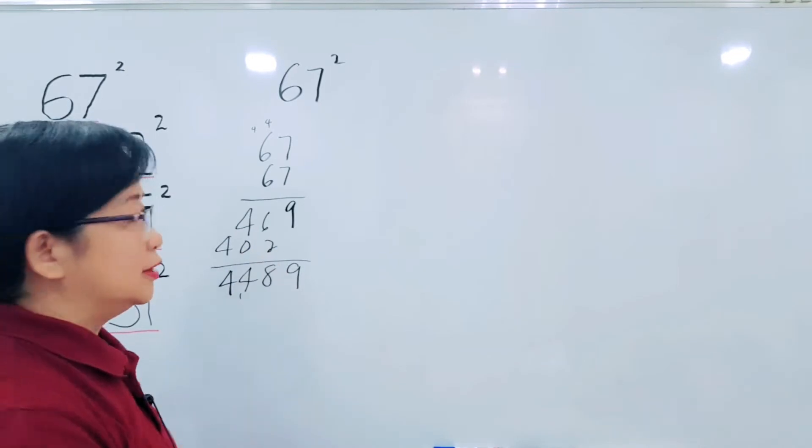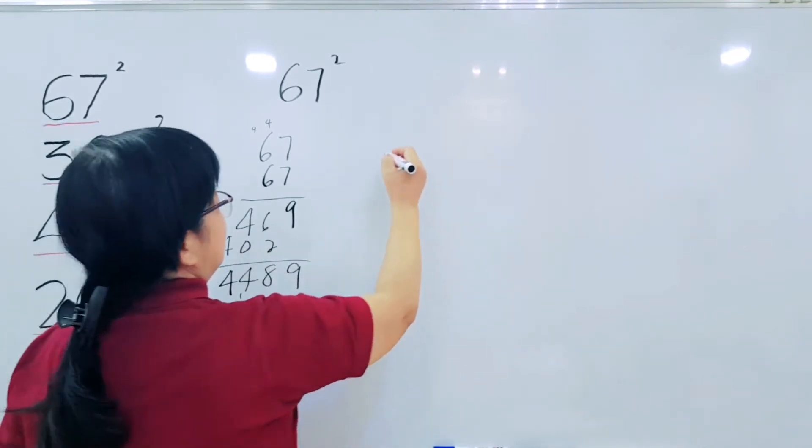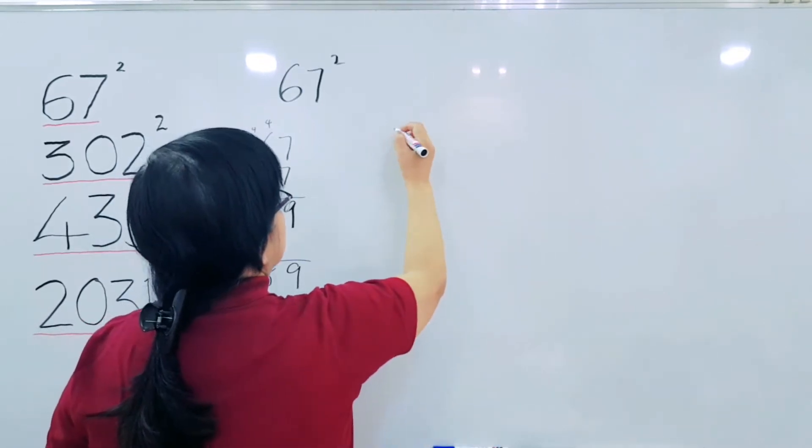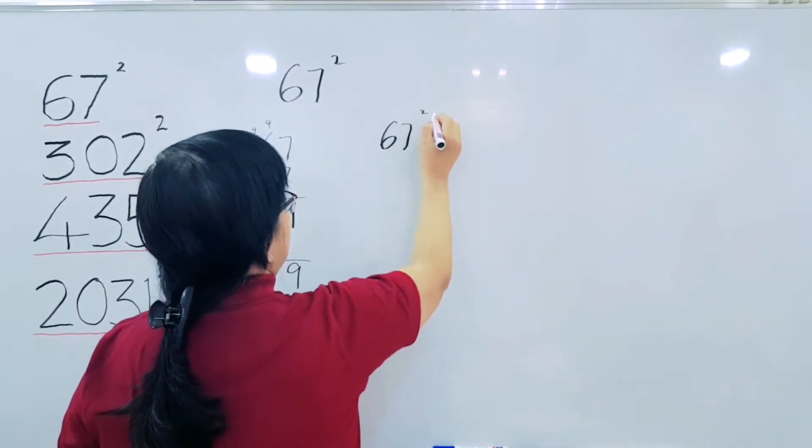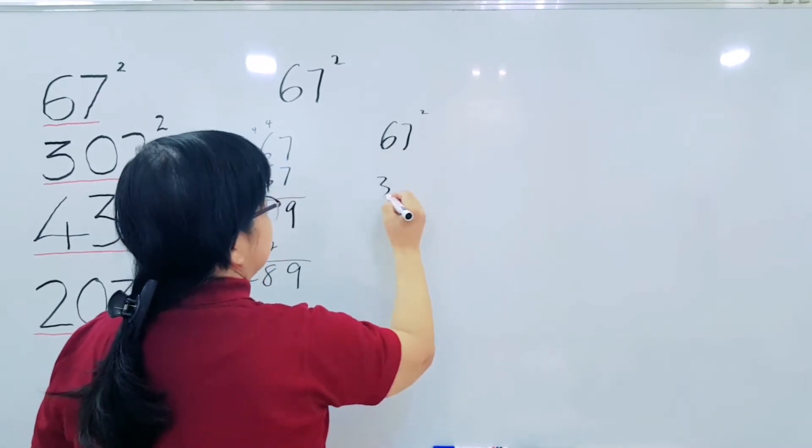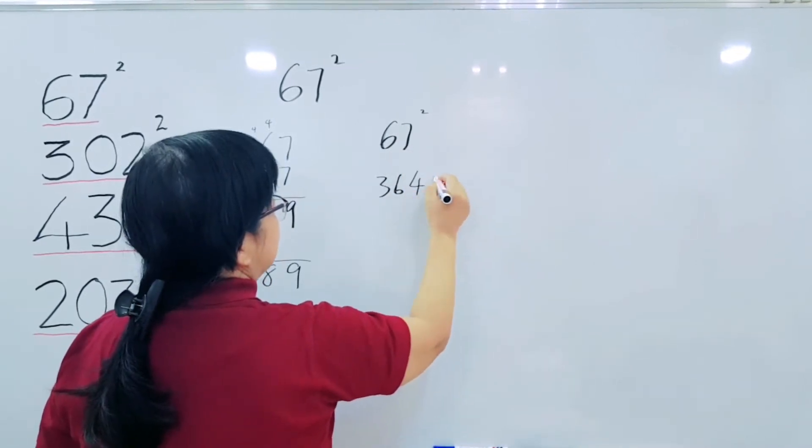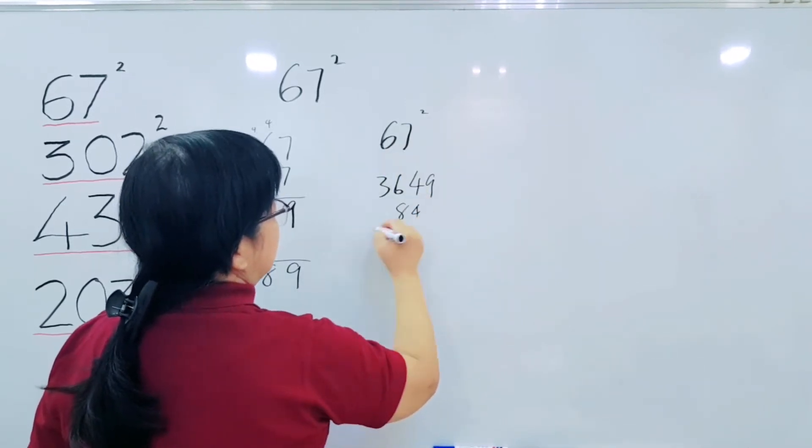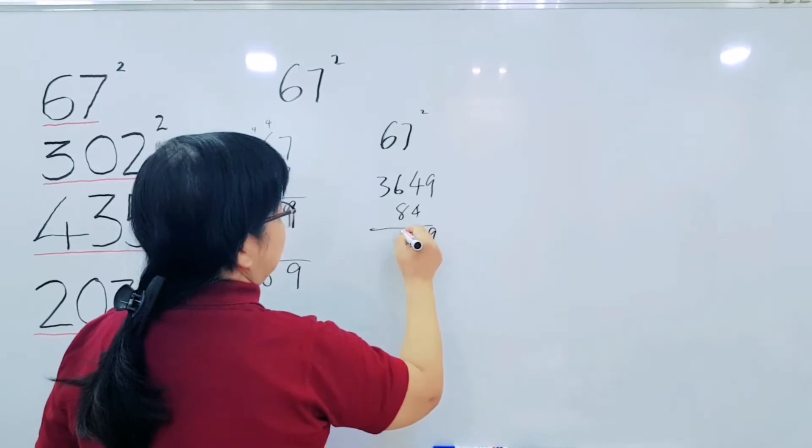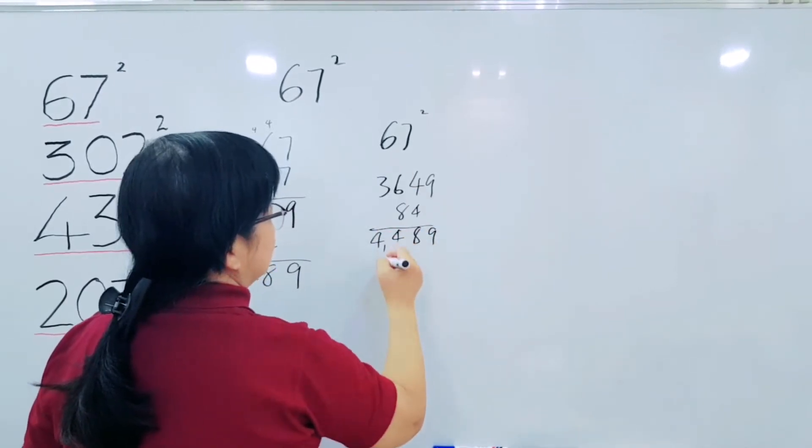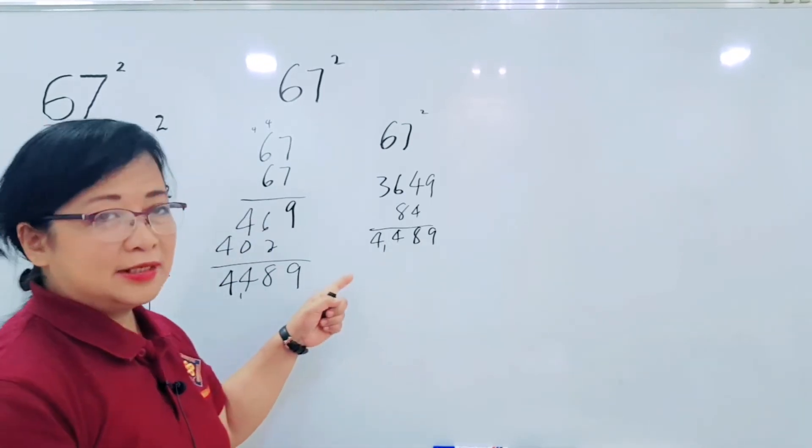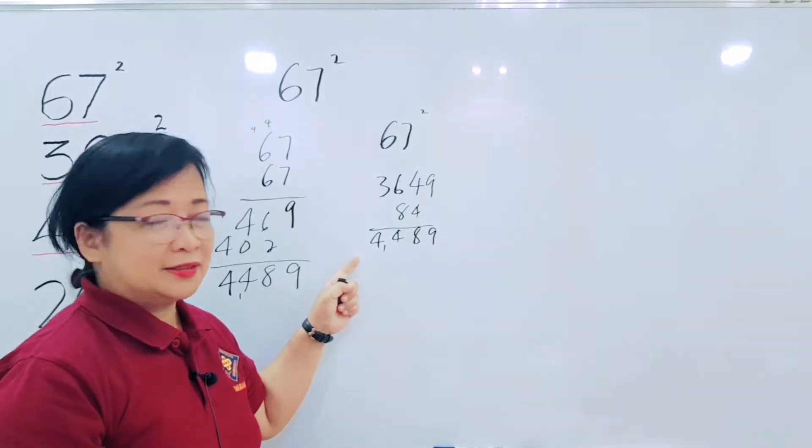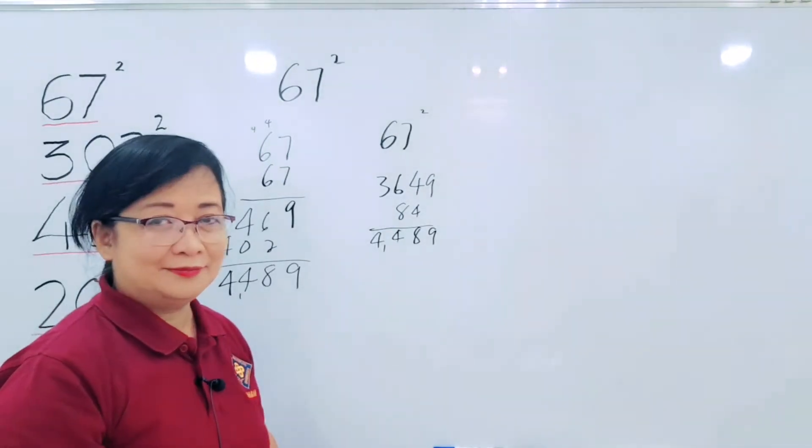This is the one we learned in school. Now the new metric I will show you. It will take less space and faster. See, we have 67 squared. 6 times 6 is equal to 36. 7 times 7 is equal to 49. 6 times 7 is 42 times 2 is equal to 84. So, 9, 8, 14 carry 1, 4. So, 4, 4, 8, 9. See? It's faster than this one and takes less space.